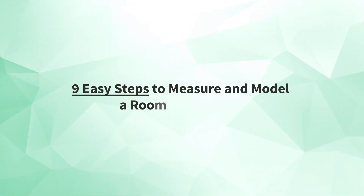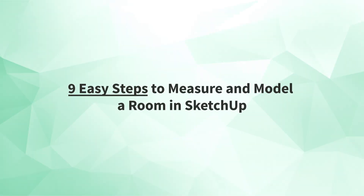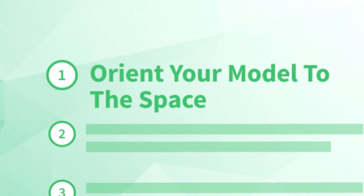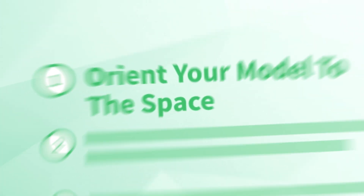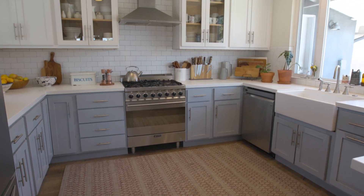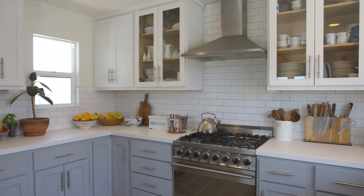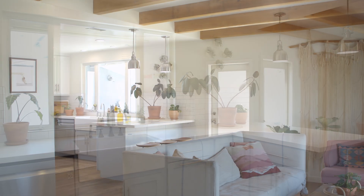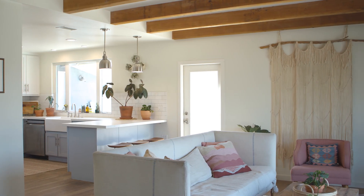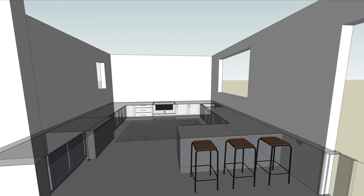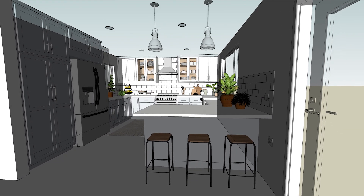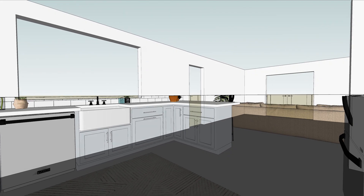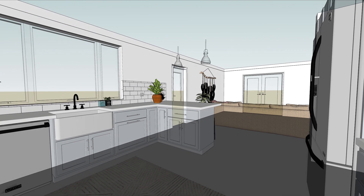So what are the nine easy steps to measure and model a room in SketchUp? Let's jump right in with number one: orient your model to the space. Let's take a quick look at the room we're about to measure and model. As you can see, it's a fairly standard layout — no odd angled or curved walls, a couple windows, and a door. It's also open to the living room on one side. We're going to primarily focus on measuring and modeling the kitchen portion of this room, but we'll also talk about how to handle the adjacent space, since it plays an important part in how the layout of the whole interior works.